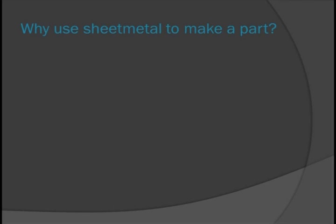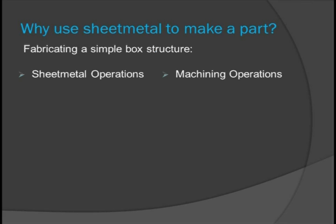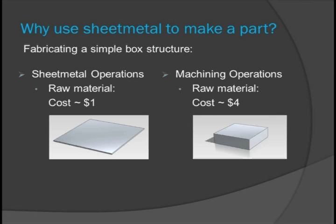Sheet metal is a versatile material capable of being formed into a variety of shapes. To demonstrate the usefulness of sheet metal, we will compare fabricating a simple box structure from sheet to the machining processes required to manufacture it from a solid block. Because material cost is always based on total volume, the cost for a piece of sheet metal versus a solid block is much less.